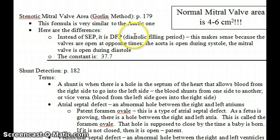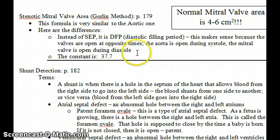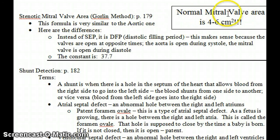The diastolic filling period is when the mitral valve is open — that's the DFP for the mitral valve. The constant for the mitral valve is 37.7. Those are the key differences, but otherwise the formulas are the same for determining the mitral valve area.